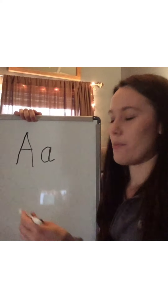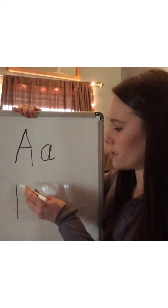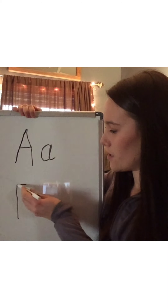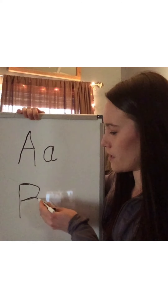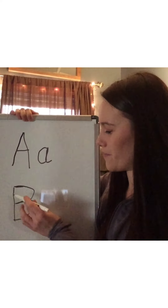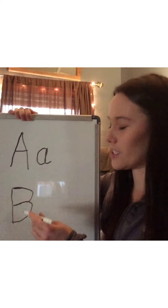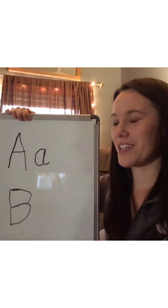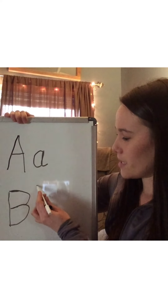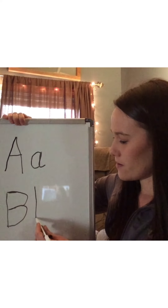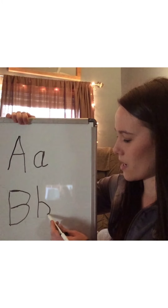Then we're going to do the capital B. So you do a line down, lift up, go back to the top, do a hump and then another hump. It's a little shaky after doing that movement activity — I'm out of breath! And then for the lowercase b, you go down, lift up, go to the middle of the line and make a hump.